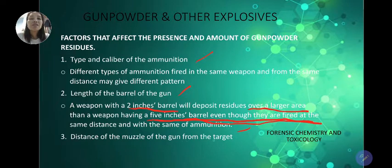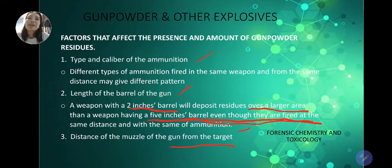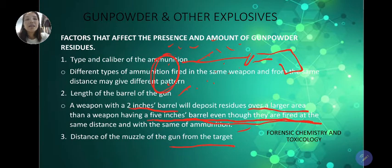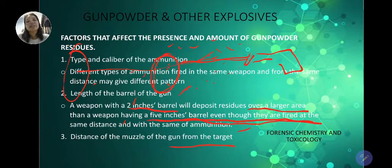The distance of the muzzle of the gun from the target is also a factor — the closer the firearm is to the target, the more gunpowder residue can be obtained. We can swab the body or clothing of the victim when the gun was close to the target. When the distance is greater, because of gravity, the residues tend to fall downward and may not reach the victim.